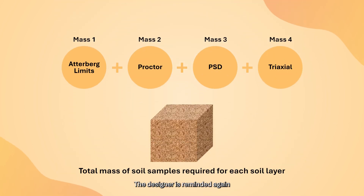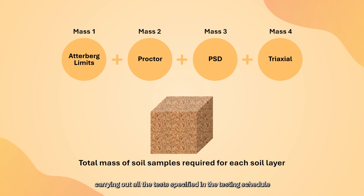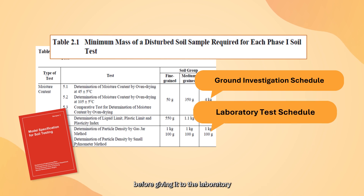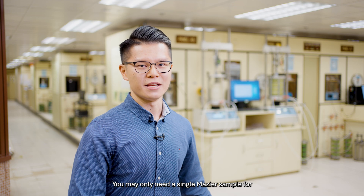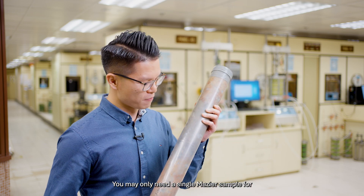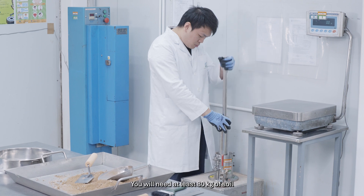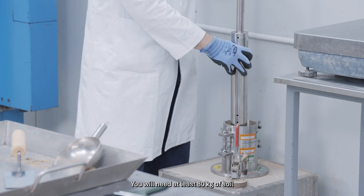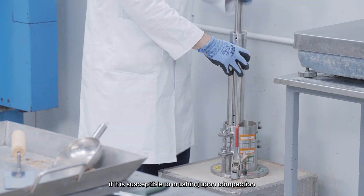The designer is reminded to check the adequacy of soil masses for carrying out all the tests specified in the testing schedule before giving it to the laboratory. You may only need a single Mazier sample for triaxial tests; however, this will not be sufficient for a Proctor compaction test. You will need at least 80 kilograms of soil if it is susceptible to crushing at point compaction.